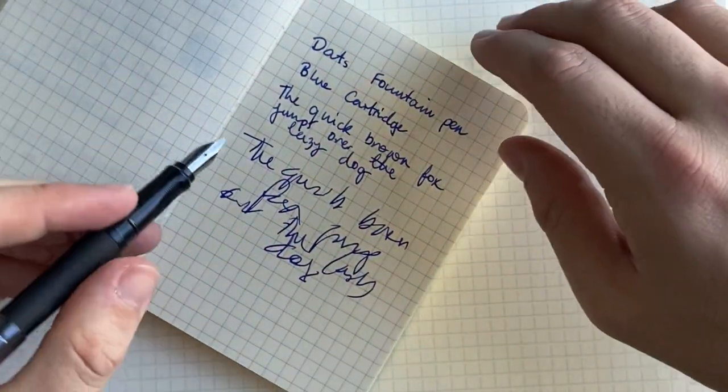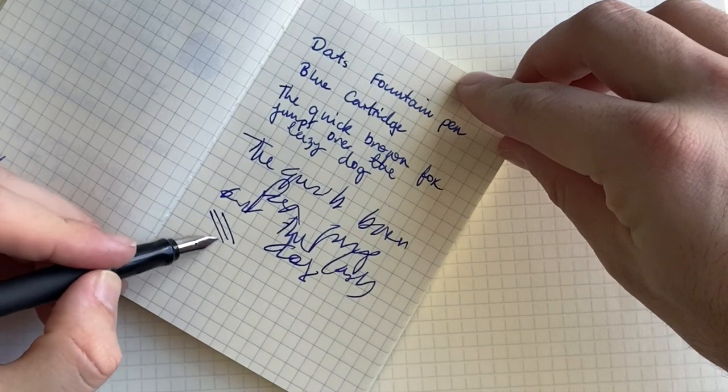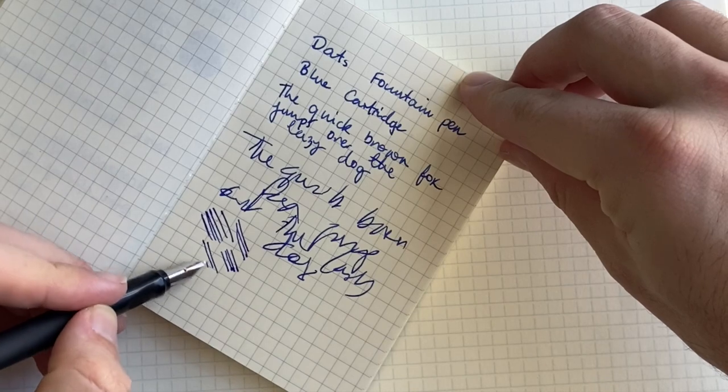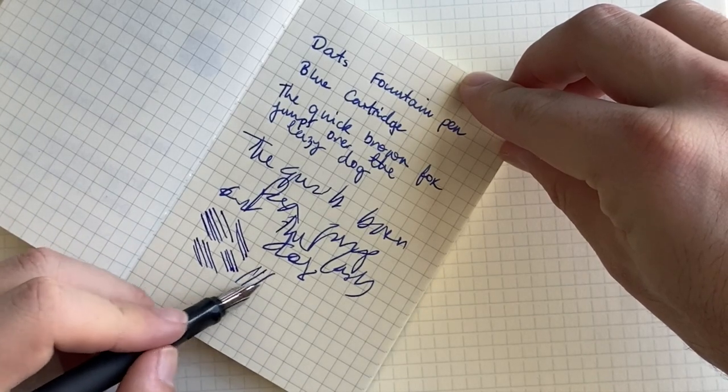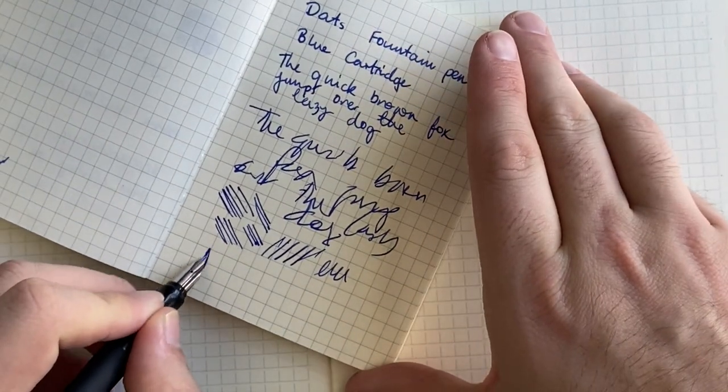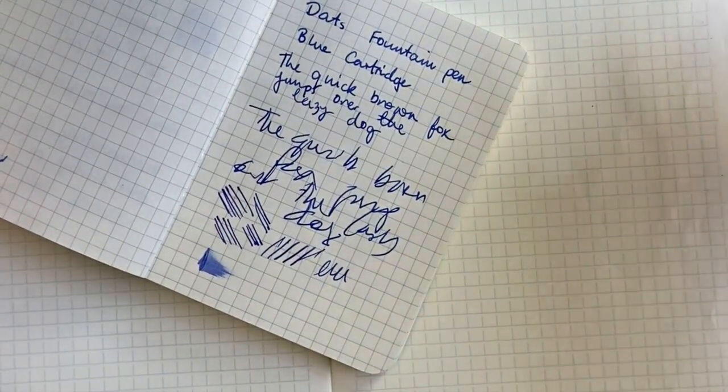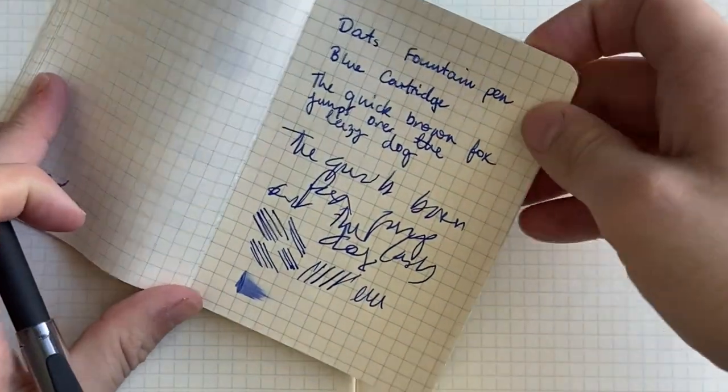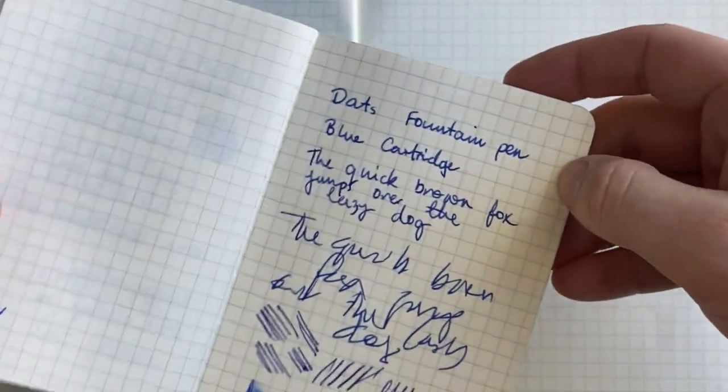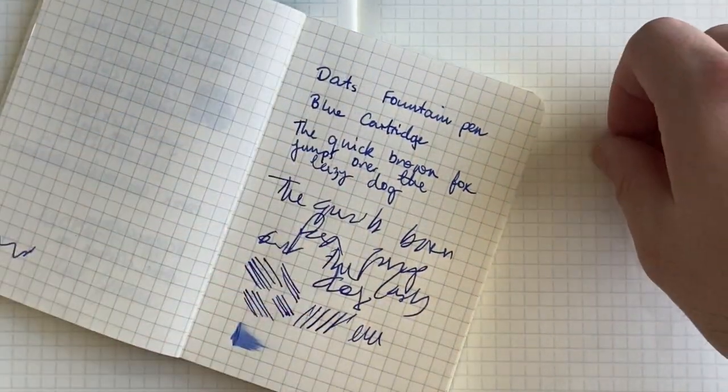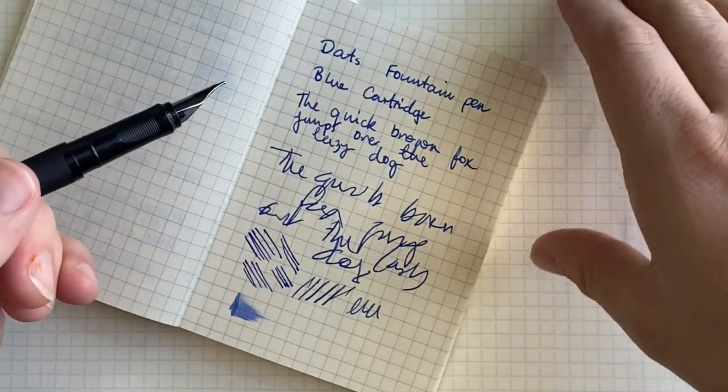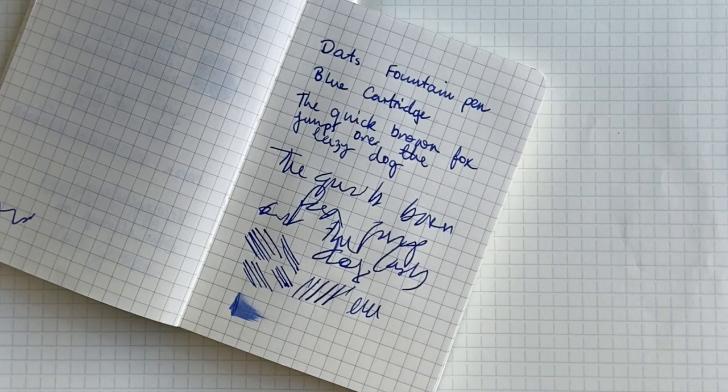I'm gonna say straight up, there is feedback on the nib. It's not the smoothest - particularly in that direction, like that sideways. That way it's not so bad. Right to left, pretty scratchy. But up and down, it's actually not too bad. It's got reasonably good flow, it's certainly not dry. The blue that it comes with is pretty stock standard, but it's fine. It's probably close to a medium kind of line, I would say.